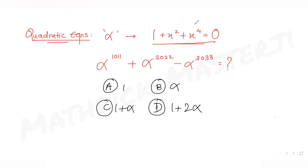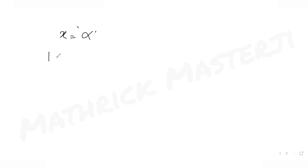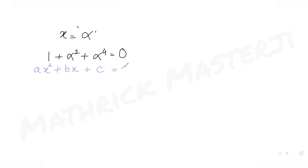Since alpha is a root of the equation, we substitute alpha for x everywhere. Our equation becomes 1 + α² + α⁴ = 0. Comparing this with the standard quadratic form ax² + bx + c = 0, we can rearrange this as α⁴ + α² + 1 = 0, where the variable is α².